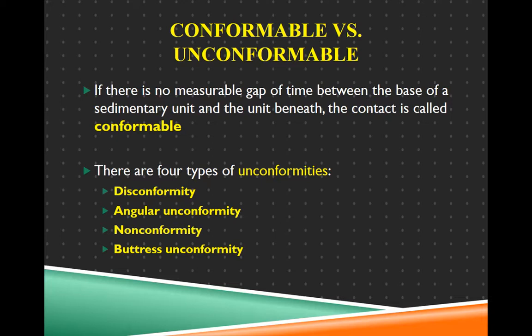Unconformable means there was a gap. It could be 50 years or 50 million years — there's a gap in the sequence. It's like looking at a calendar and the month of May has been torn out. It's gone. That's unconformable.